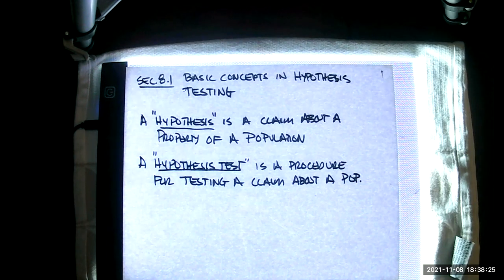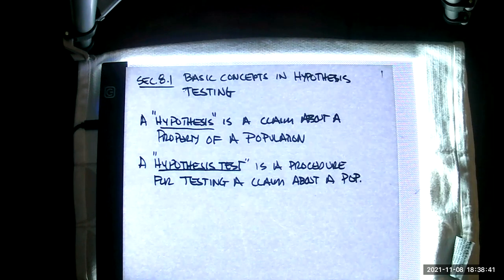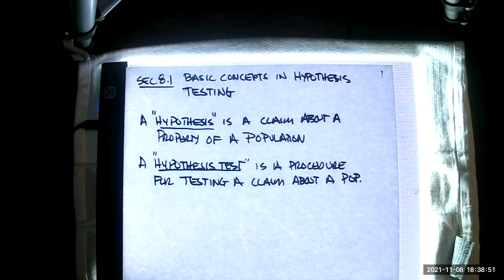Basic concepts in hypothesis testing. We work with what is known as a hypothesis — all this is is a claim about some property of a population. It could be a claim like the mean IQ level, average commute time, or the proportion or percentage of students who take statistics. It will be a claim about some aspect of a population, a very large and unknowable object.